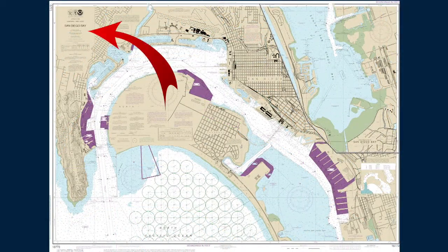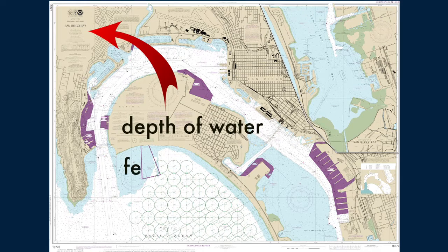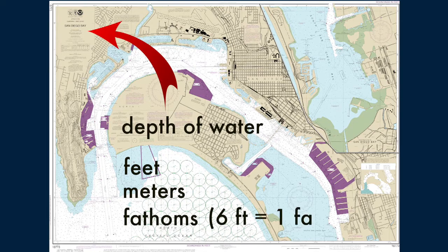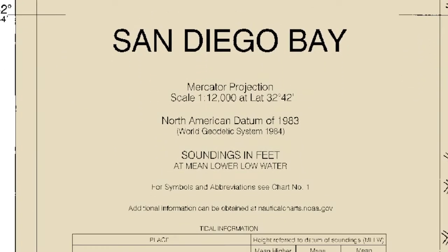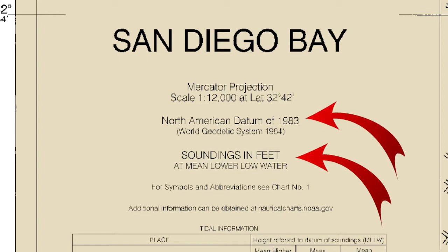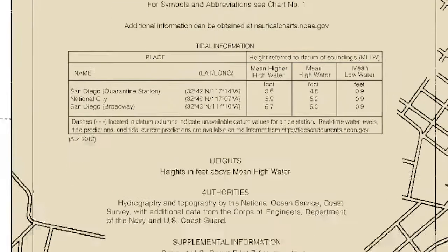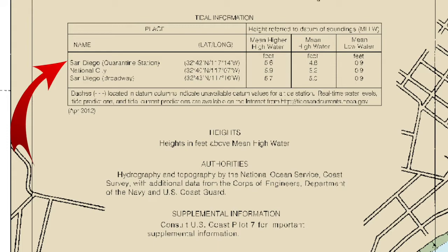Also located in this area is important information about how the depth of the water is measured, either in feet, meters, or fathoms. By the way, there are six feet in a fathom. How is the water depth measured on this chart? In feet at low tide — that's when the water should be shallowest. Other information in this area that is important to navigators are the date the chart was drawn, title information, and how the heights of landforms and structures are measured.